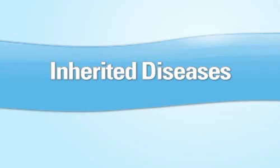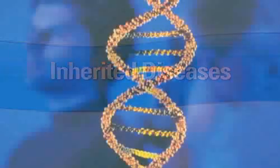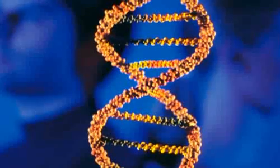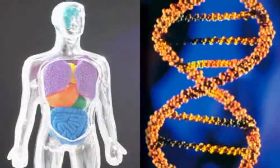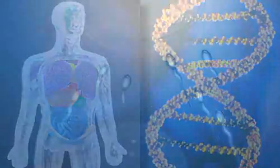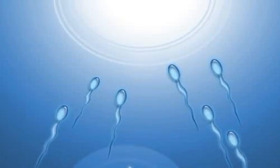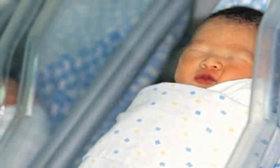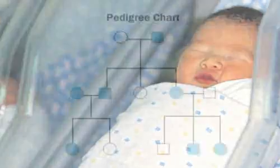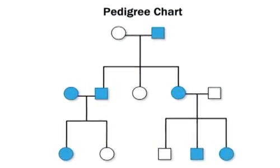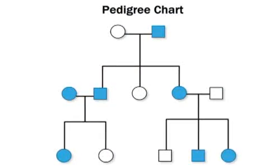Inherited Diseases. Sometimes a gene is defective or abnormal. The abnormal gene stops the body from working properly. An abnormal gene can be passed from the parents to their offspring, and the gene can cause disease in the offspring. A disease that is caused by an inherited abnormal gene is called an inherited disease.